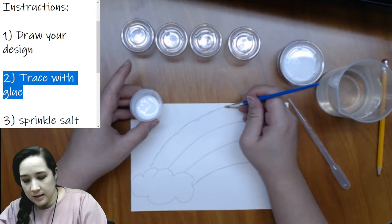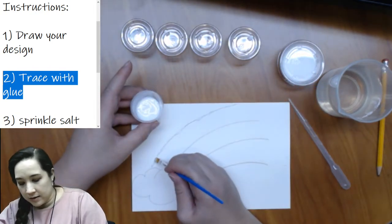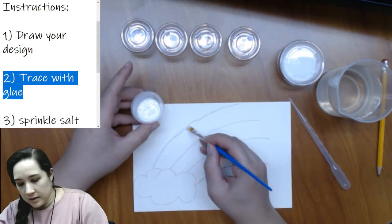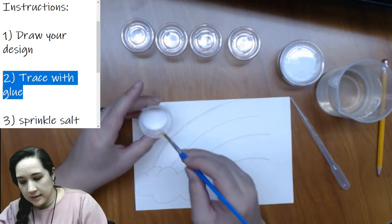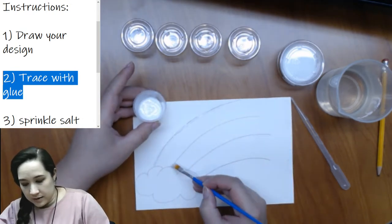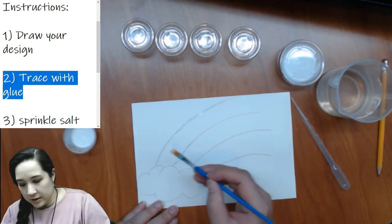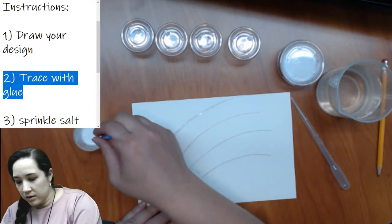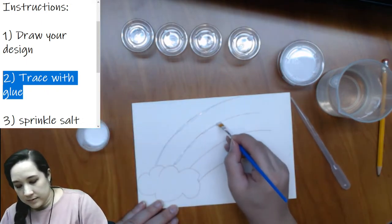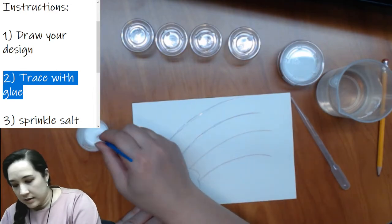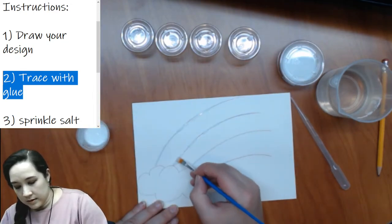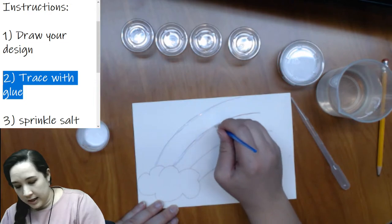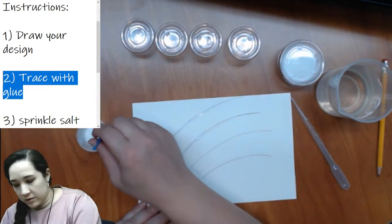So once you're done with your drawing, I'll go ahead and open up my glue container. I'm going to take my brush. And again, if you have a squeeze bottle, I would just try to trace your pencil markings with the squeeze bottle. But I'll show you how to do it with the paintbrush. So I'm just going to take some glue on my paintbrush and I'm just going to draw or trace over with my brush on my pencil markings. And you kind of want it a little bit thick.